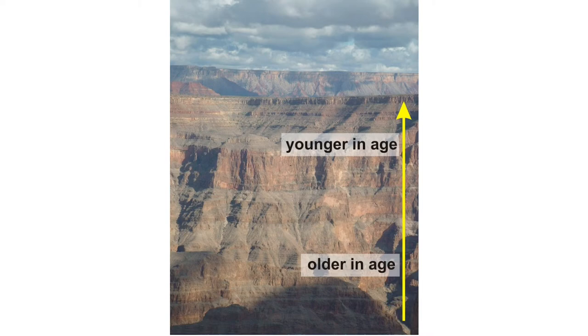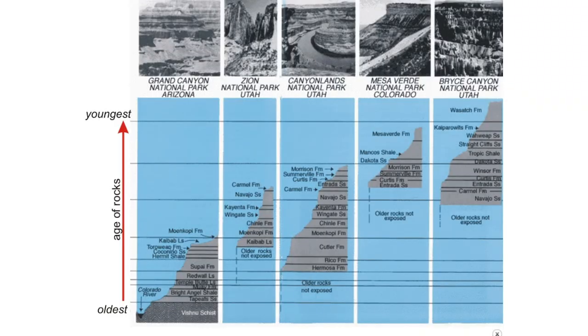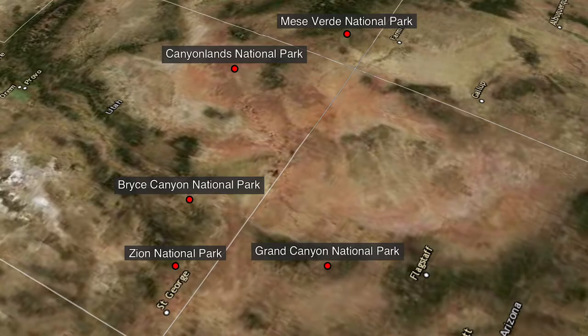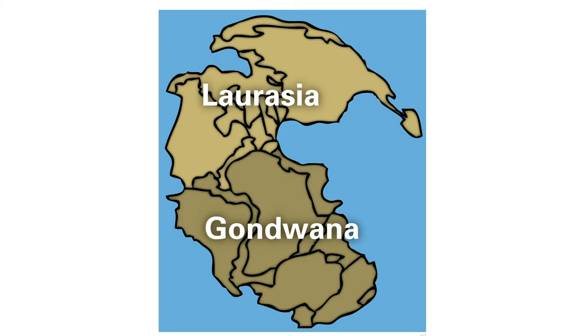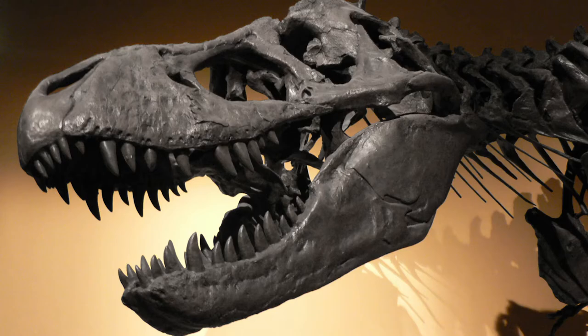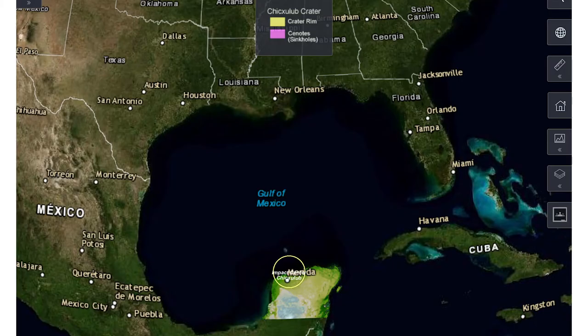Employ the concepts of relative age, unconformities, cross-cutting relationships, inclusions, and correlation to place rocks in sequence. Understand the process of radioactive decay and its use in conducting radiometric dating of rock and fossil samples to determine absolute ages. Identify relationships between Earth's major geologic and biologic events over eons, eras, periods, and epochs.